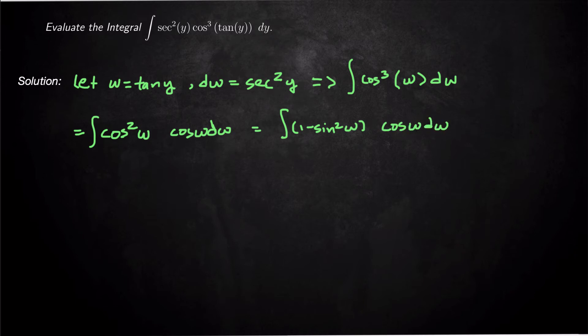So then we're going to do a substitution. I'll say maybe like u is equal to sine of w, so u equals sine of w. And then du is equal to cosine of w dw.